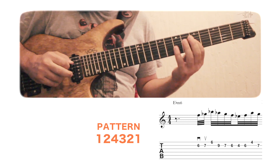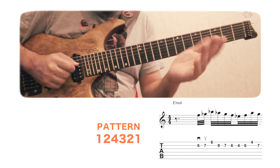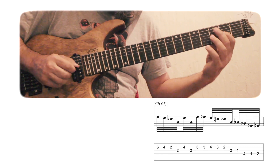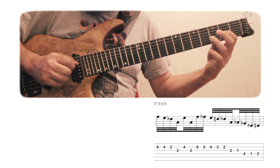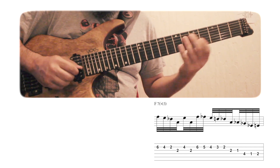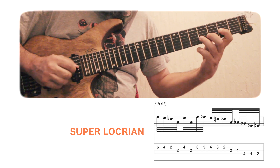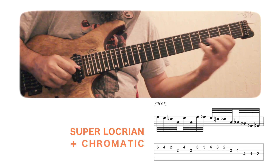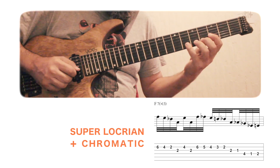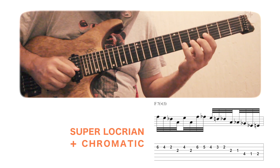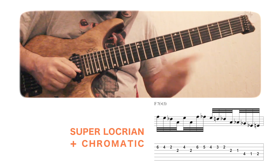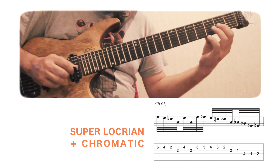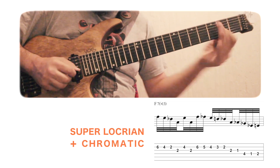This is what he plays over the F7: Superlocrian, and chromatic — from one note to the arpeggio. The root, in this case, to the fifth, sharp fifth. And then jump a third.